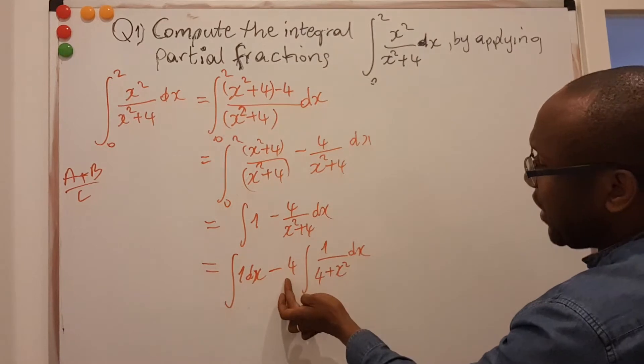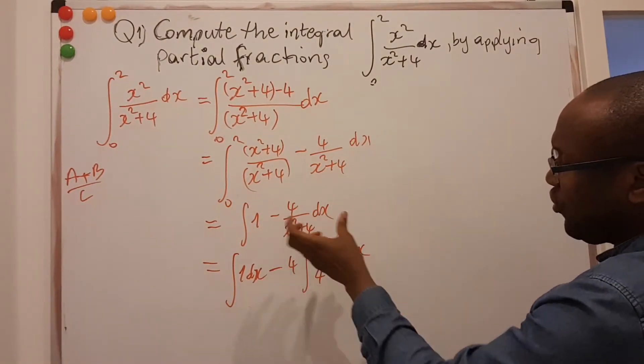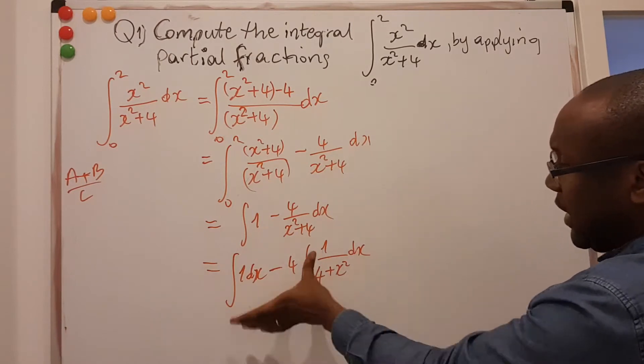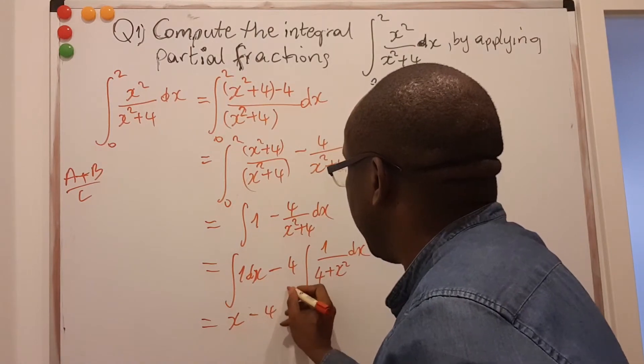So this is a constant, I can keep it outside. And here, just arranging it to be neat. So if I do this, this first integral is just x minus 4.